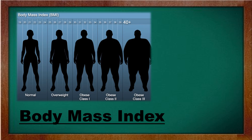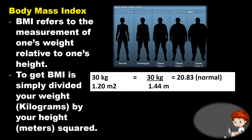We are now done with the health-related and skill-related components. Let's move on to BMI, or Body Mass Index. BMI refers to the measurement of one's weight relative to one's height. To get your BMI, simply divide your weight in kilograms by your height in meters squared. For example, if you weigh 30 kg and your height is 1.2 meters, then 30 divided by 1.44 equals 20.83 — that is a normal BMI.